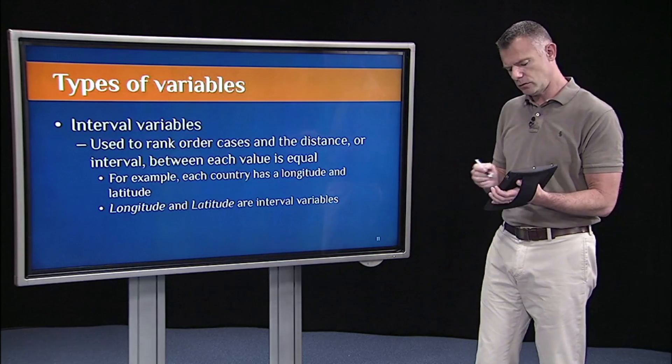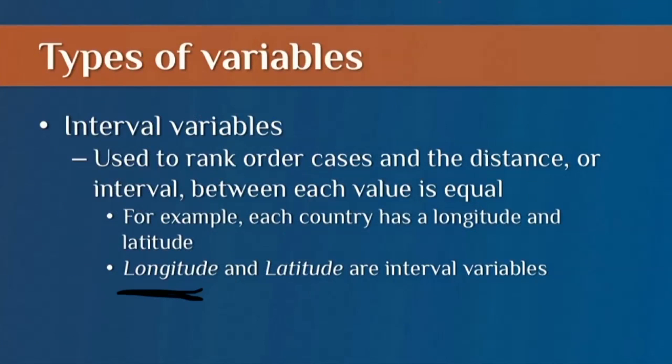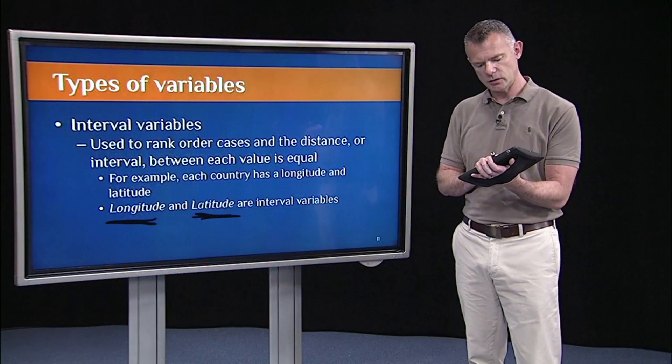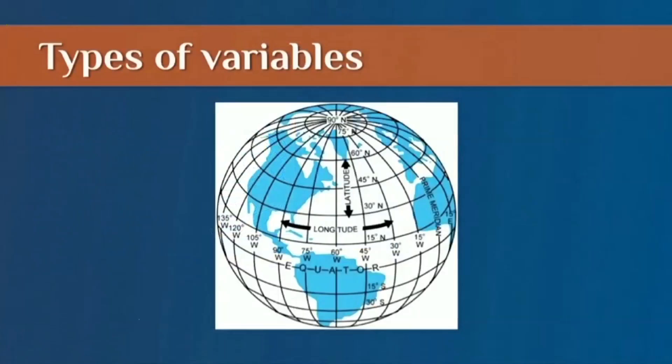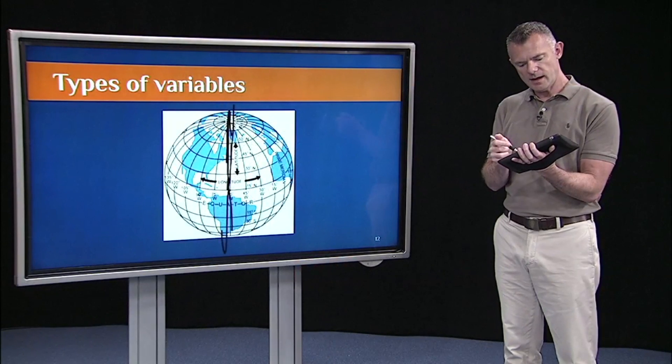Longitude and latitude are equal interval variables. In case you're not familiar with longitude and latitude, here's an image of the globe. Longitude refers to sort of east, west, where you are on the globe. And latitude refers to north, south, where you are on the globe.